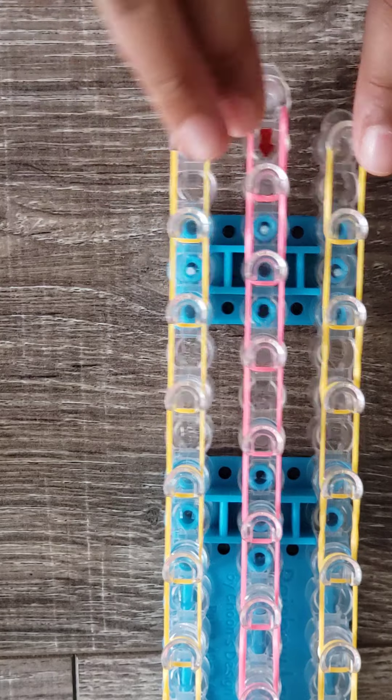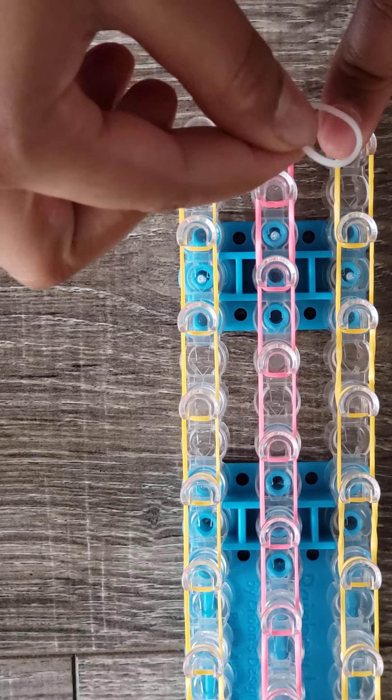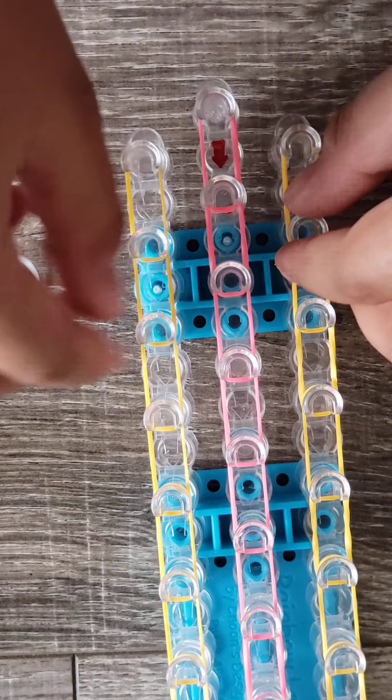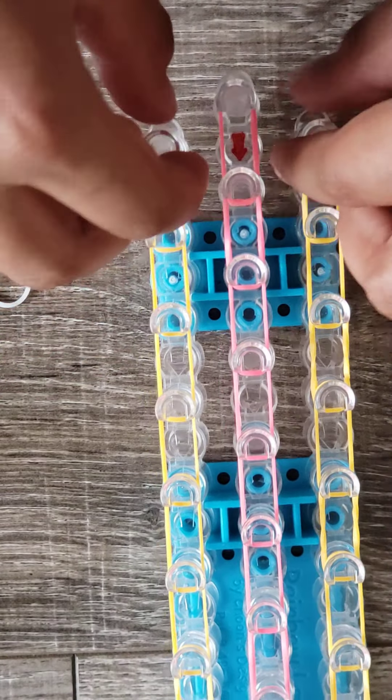I say the white and what you're gonna do is after skipping these three pegs you're gonna put your white. Okay actually I forgot this step. Push down all your bands because you will be putting more bands on the top.